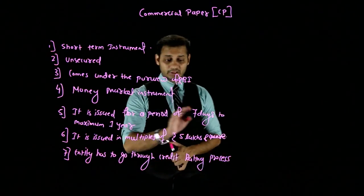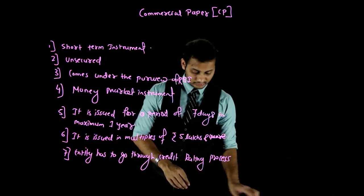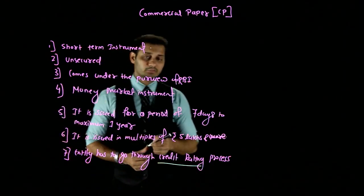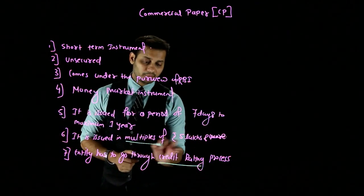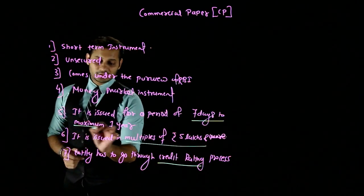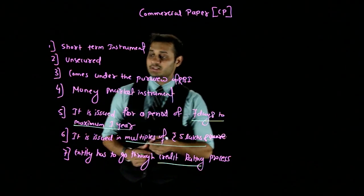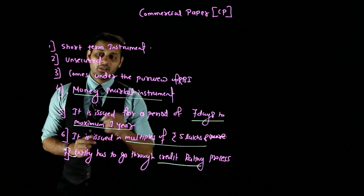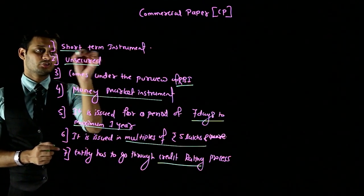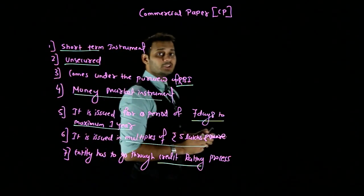Let me give you the main points. First, you have to get credit rating. When you issue commercial paper, it will be in multiples of Rs 5 lakhs or more. The maturity is 7 days to one year. It's a money market instrument, RBI governs it, it's unsecured, and for a short term period. These are the basic features of commercial paper.